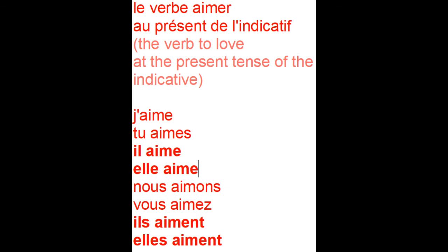One more time: j'aime, tu aimes, il aime, elle aime, nous aimons, vous aimez, ils aiment, elles aiment. And the verb before conjugation is 'le verbe aimer' — a-i-m-e-r. Okay, letting you go with this verb — enjoy, bye bye!